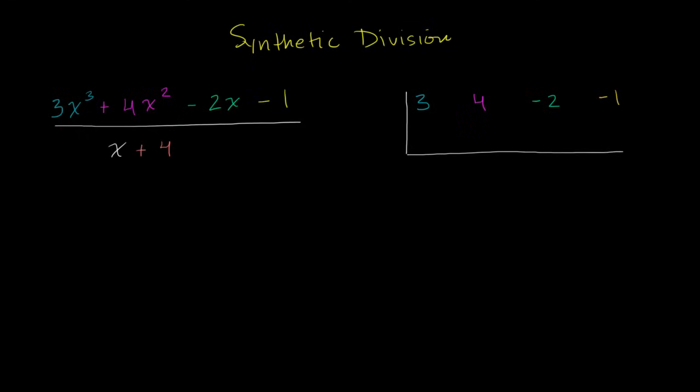And then we look at the denominator. And in particular, we're going to look at whatever x plus or minus is right over here. So we look at right over here, we have a positive 4. And instead of writing a positive 4, we write the negative of that. So we write the negative, which would be negative 4. And now we are all set up, and we are ready to perform our synthetic division.